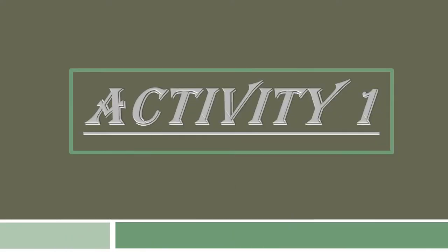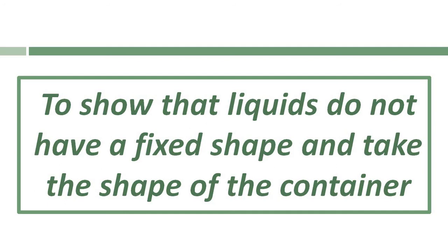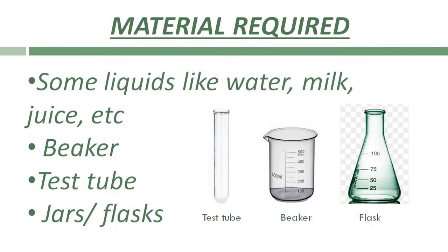Now let's discuss some properties of liquids with an activity. Activity one is to show that liquids do not have a fixed shape and take the shape of the container. For this activity, you need some liquid like water, milk, and juice, and different containers such as a beaker, test tube, jar or flask. You can also use a glass, cup, bowl, or jug — you just need to use different containers.